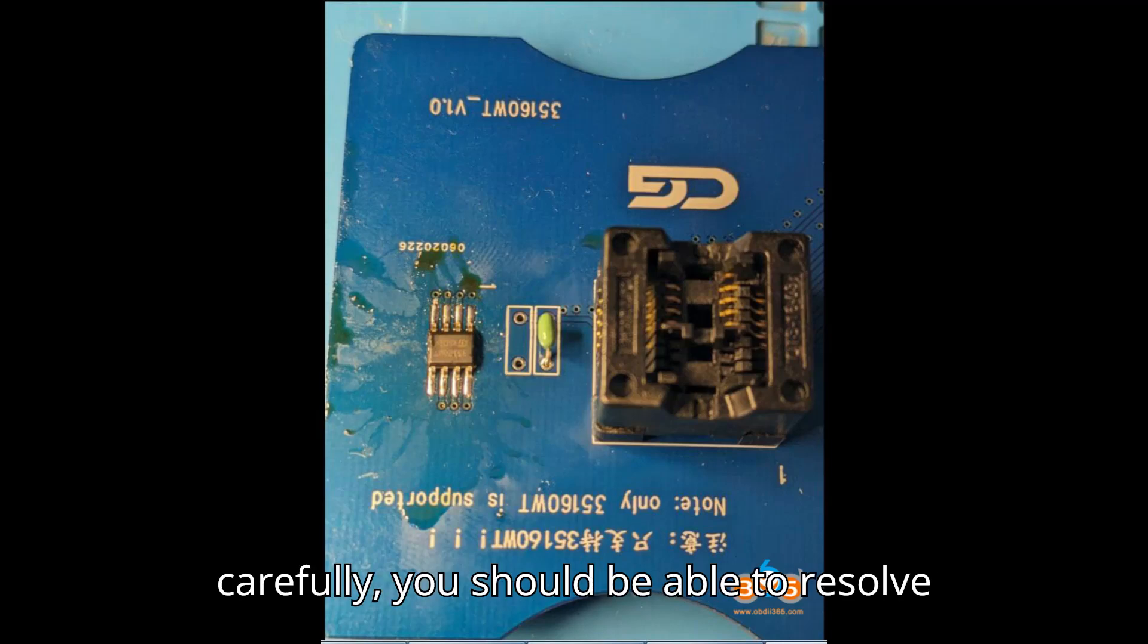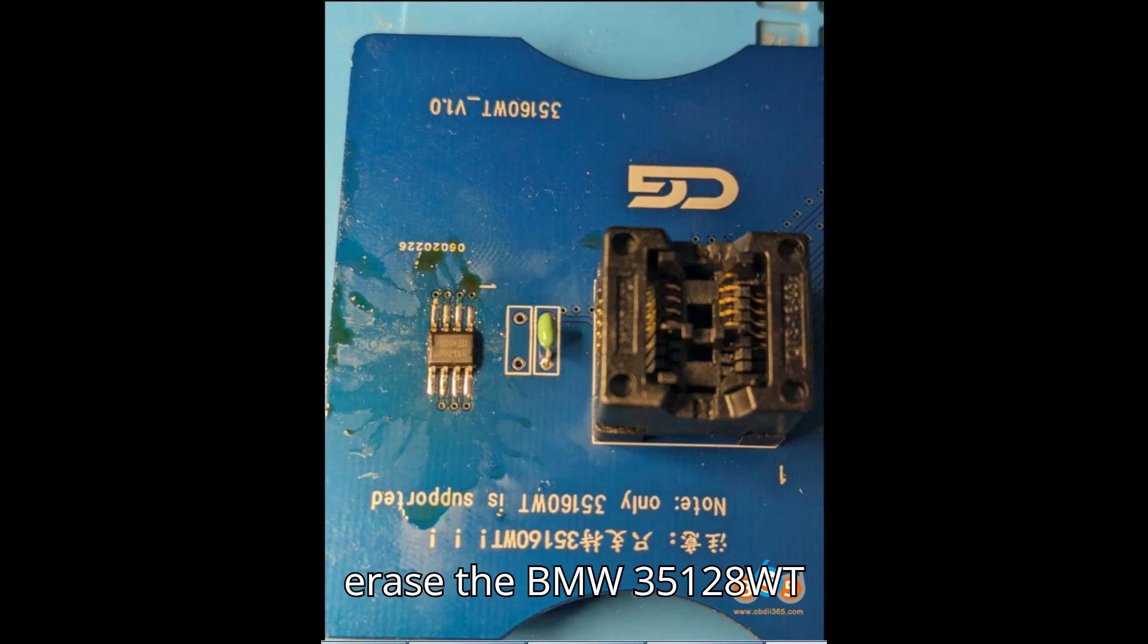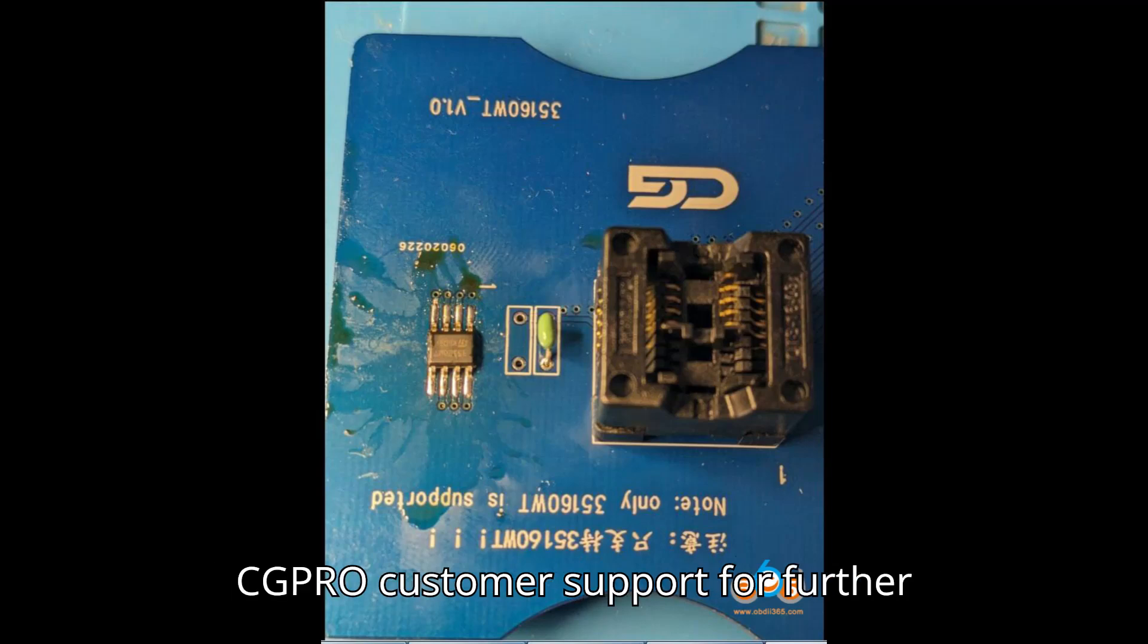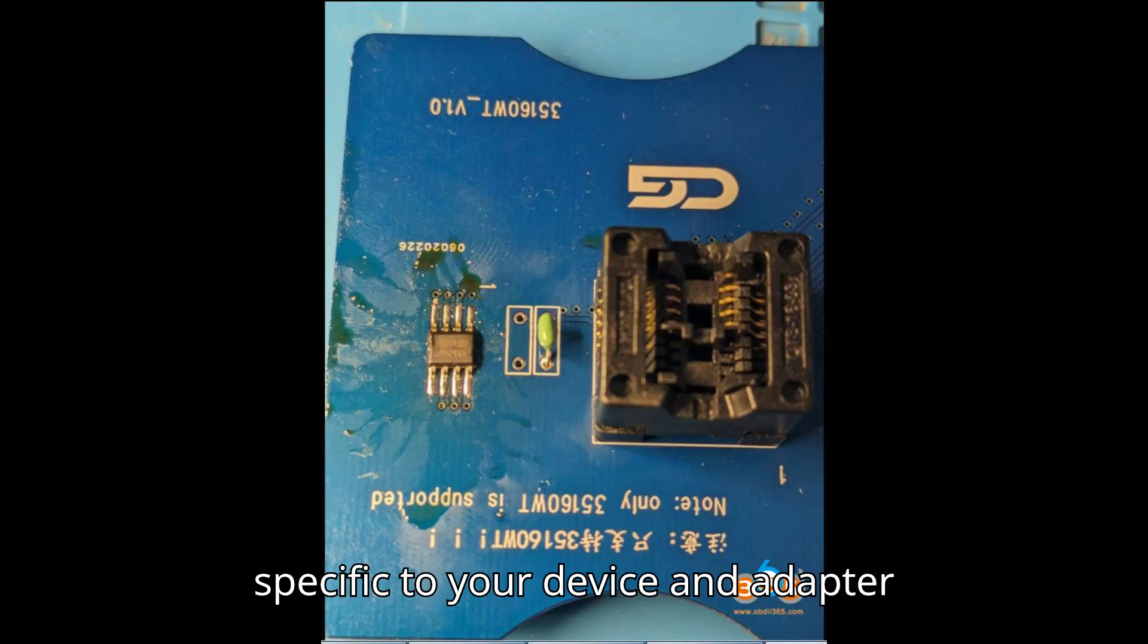By following these steps carefully, you should be able to resolve the issue of the CG Pro device failing to erase the BMW 35128WT EEPROM chip. If the problem persists despite these efforts, consider contacting CG Pro customer support for further assistance or troubleshooting tips specific to your device and adapter setup.